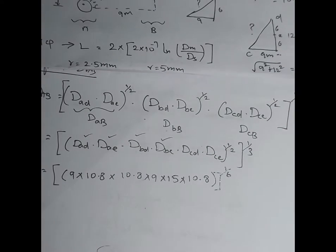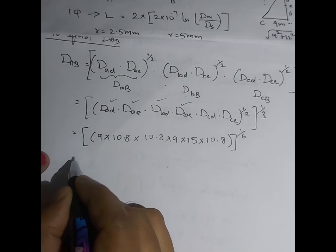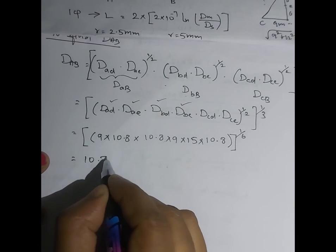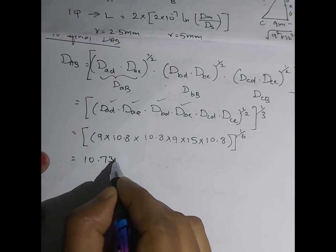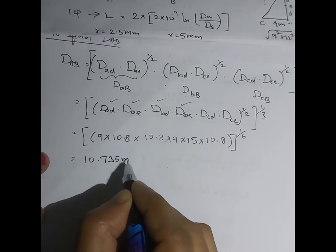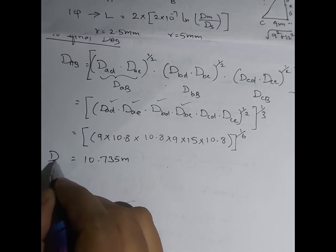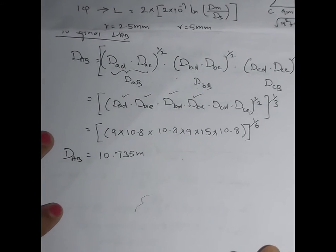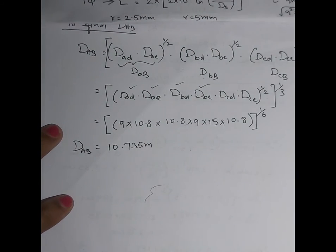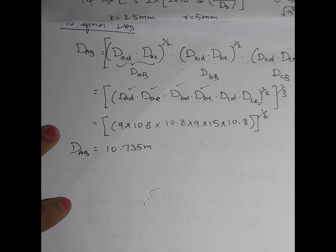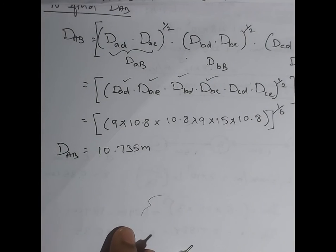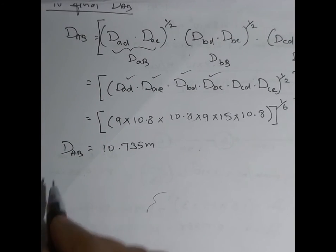With the whole power 1/6 applied to all distances, we get Dab = 10.735 m. This Dab value is common for both La and Lb. Now we have to find Ds.